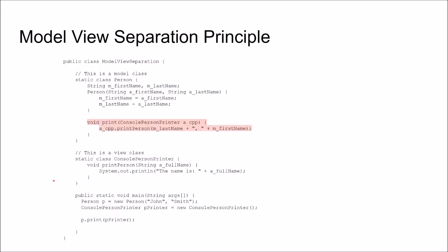Let's take an example of model view separation in practice using a small example. This is Java code, and in Java you would probably use packages to have a model package and a view package. In this example, I've just crammed everything into one main class. We have a model class, and it's this person class here. It has a first name and a last name, and when you create the person you supply the first name and the last name.